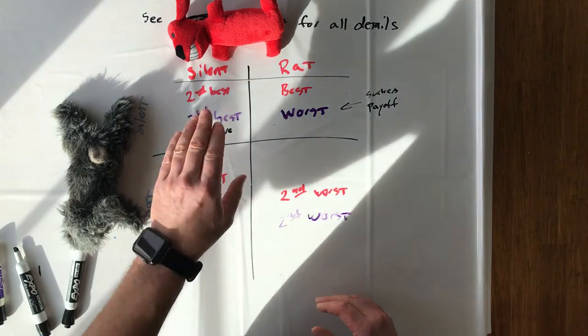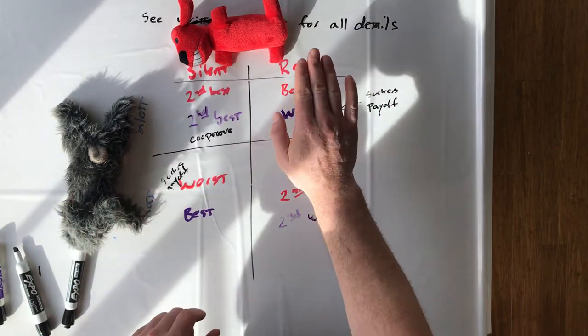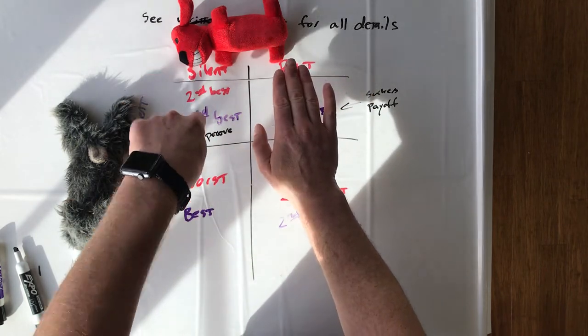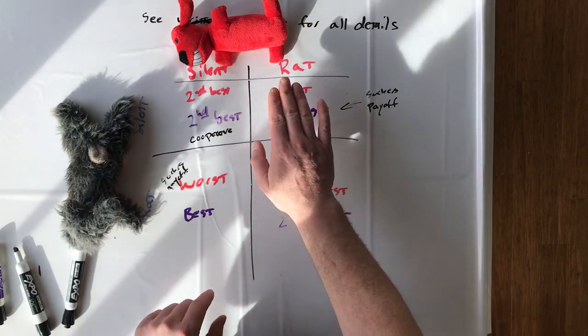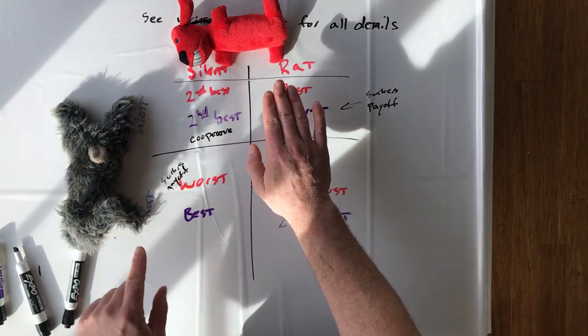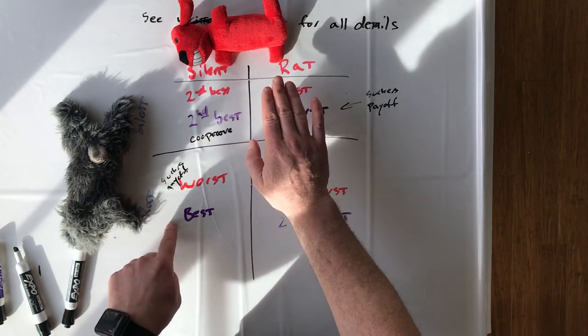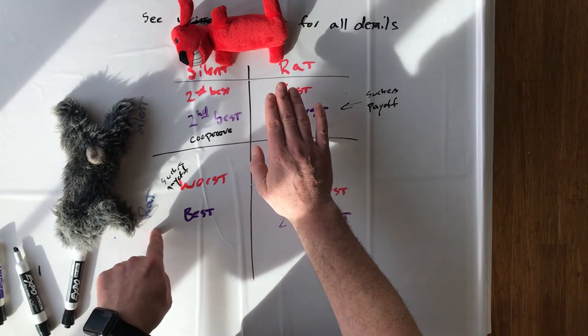But that doesn't work because once you come to the conclusion that the other party, so if Rabbit's thinking about it, if Rabbit comes to the conclusion that Red Dog is going to keep her mouth shut, there's not two possible futures anymore because we know what's going to happen. Red Dog's going to keep her mouth shut, which means Rabbit's choosing now between her second best and her best outcome. So she'll choose the thing that gets her the best outcome. That means she'll rat.